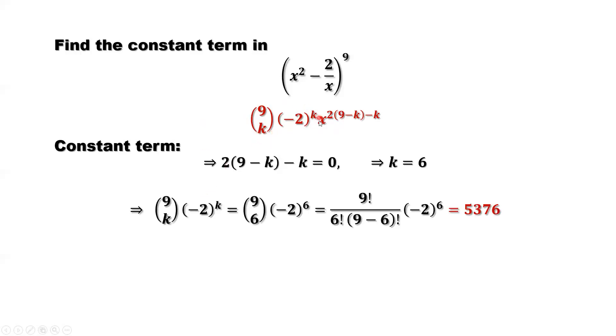Simplify the first part. Replace k by 6. 9 choose 6, the combination number, times negative 2 to the power of 6.